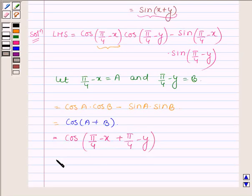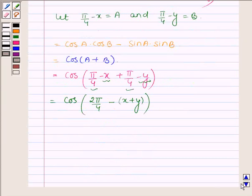And now let us substitute the values of A and B. So we have cos(π/4 - x + π/4 - y) which is further equal to cos...